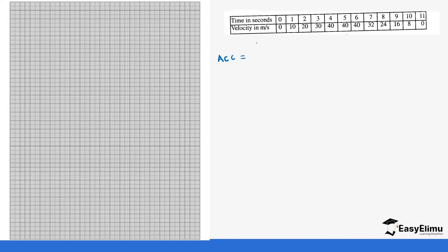The first thing we do is draw the graph. Our time axis runs from zero to eleven, so we check from the table that this works. We label the time axis: zero, one, two, three, four, five, six, seven, eight, nine, ten, eleven. We draw a straight axis line. Our velocity begins at zero and the highest value is 40.